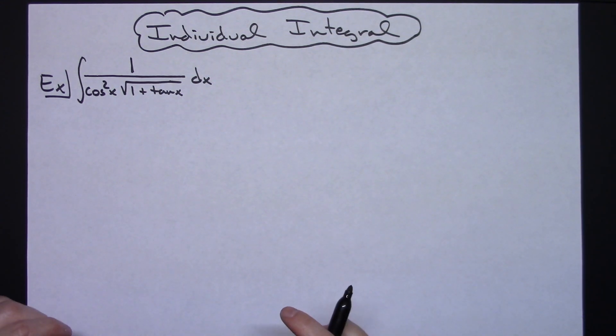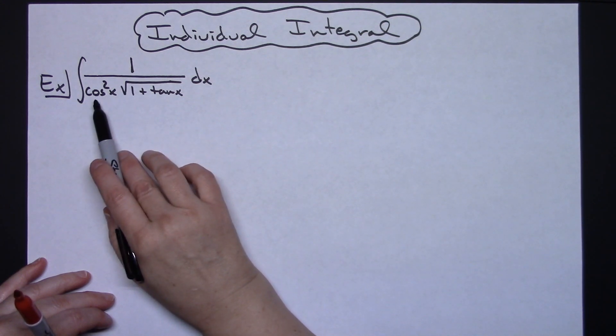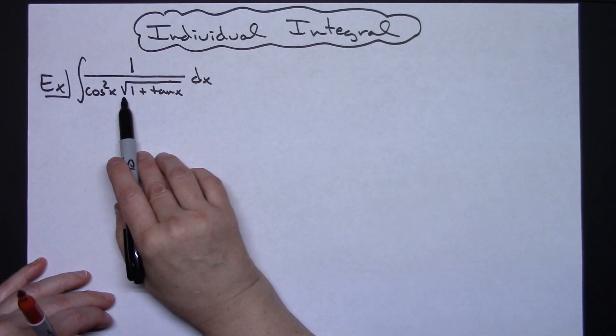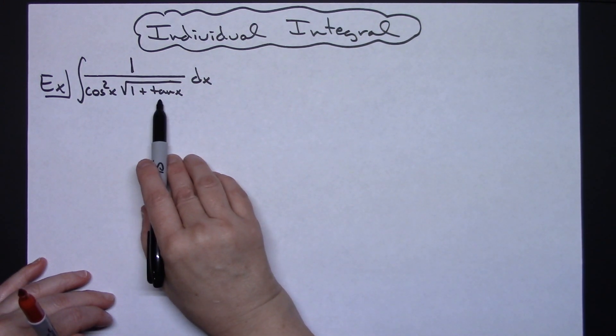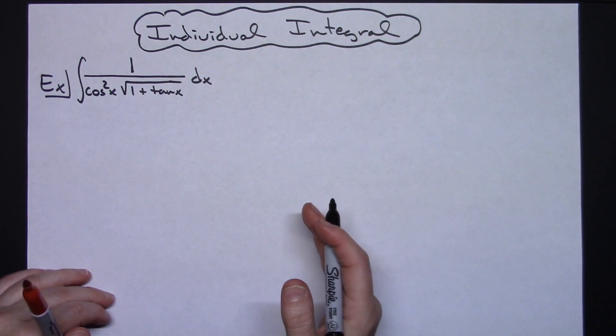In this video I'm going to be taking a look at an individual integral. We're going to be looking at the integral of 1 over cosine squared x times the square root of 1 plus tangent x dx. This is going to be a straightforward u substitution.